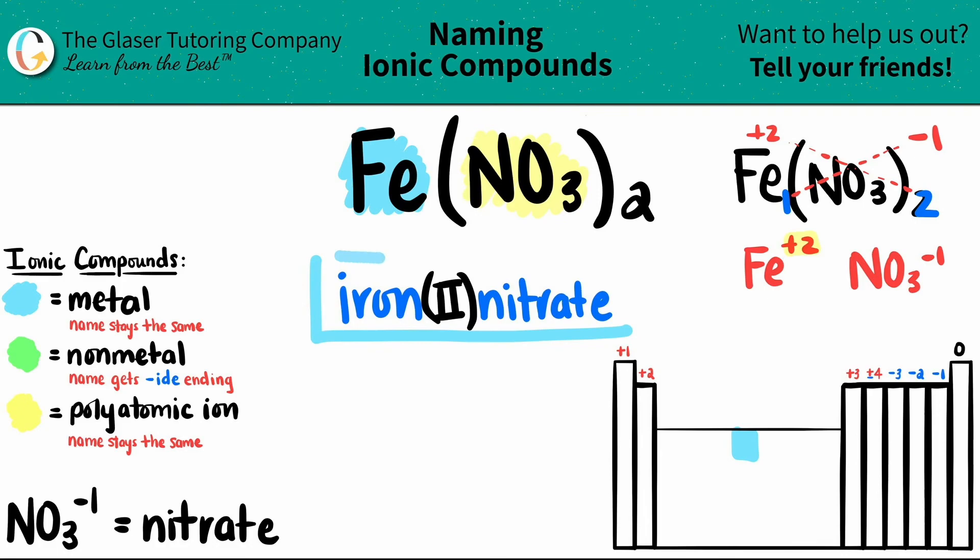So the name for the ionic compound Fe(NO3)2 is iron(II) nitrate. And that's it.